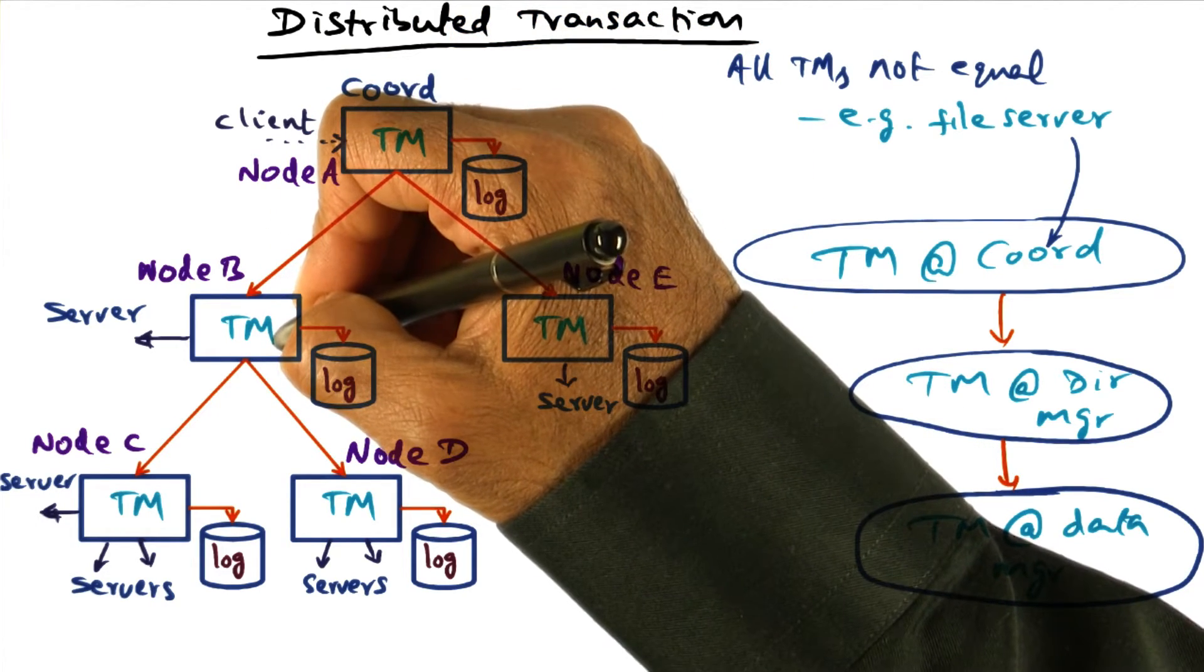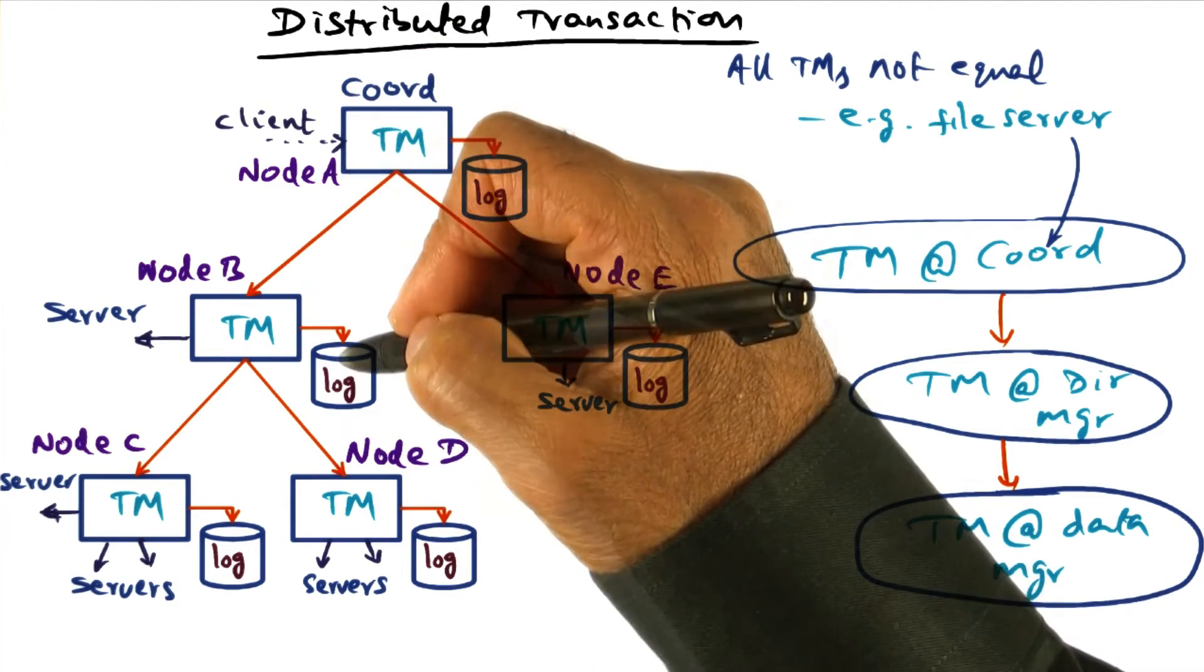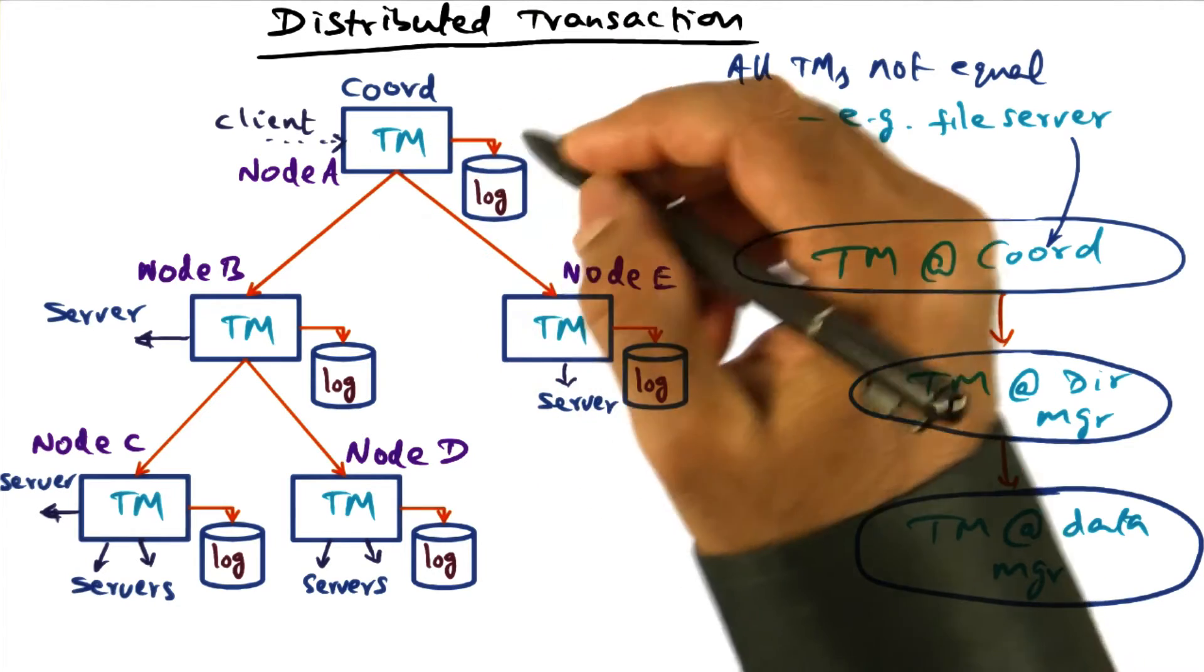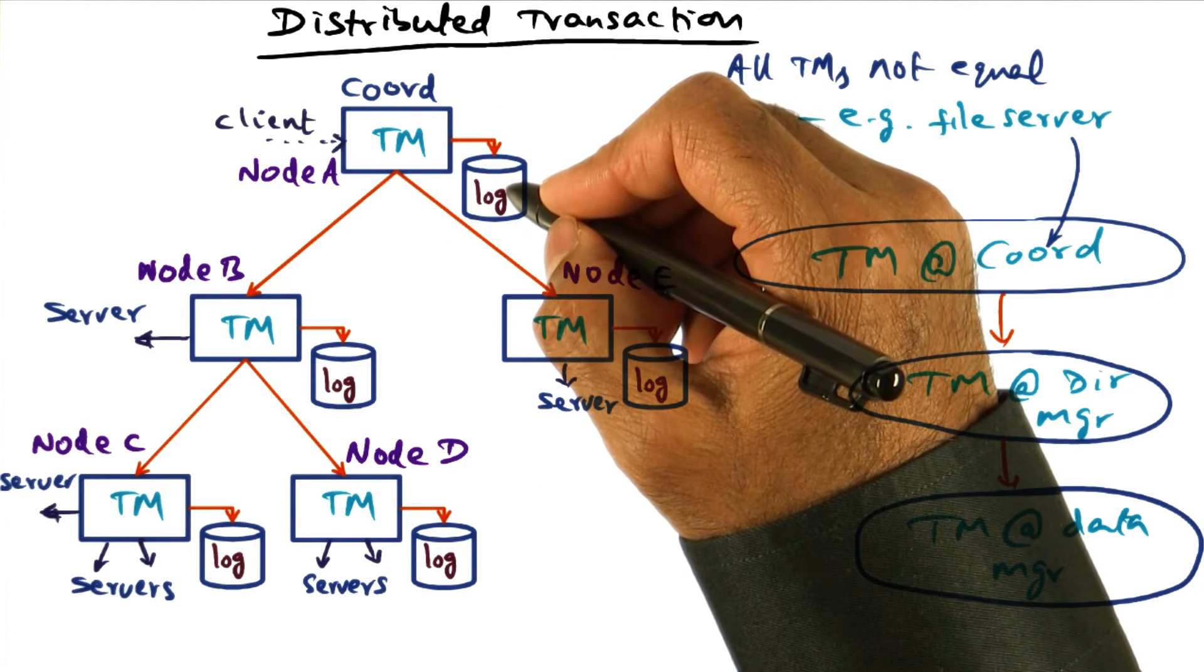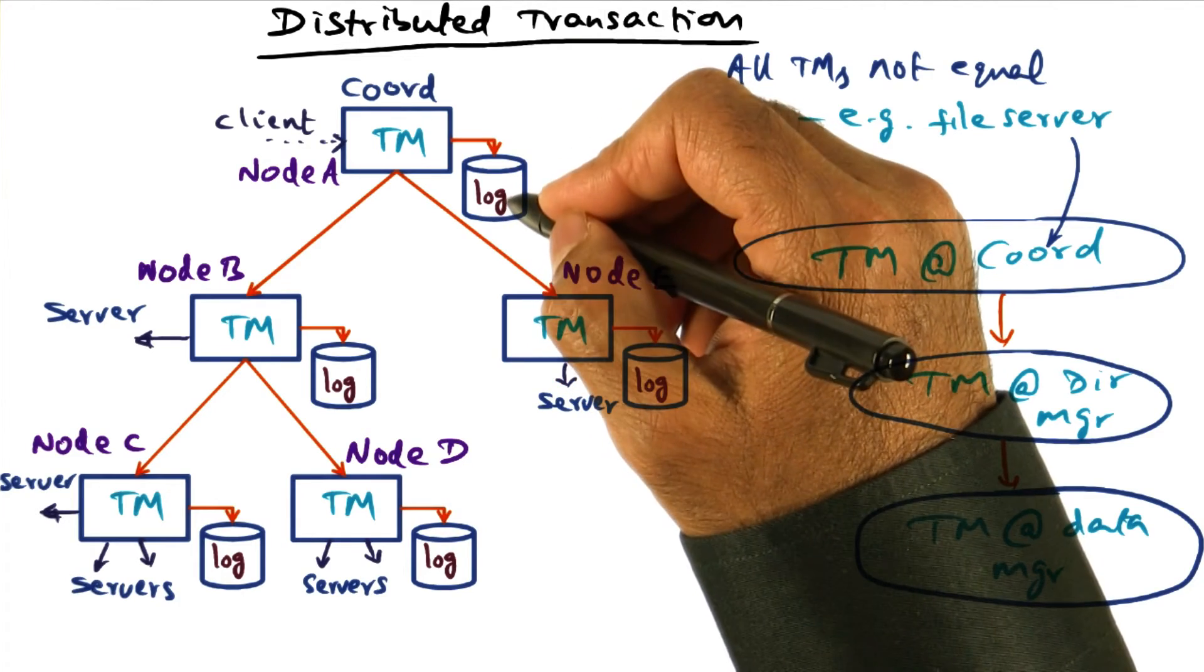Whatever is happening at that node, this transaction manager is responsible for creating checkpoint records for recoverability reasons. And these checkpoint records will be useful for warding off against failures or partial recovery of work.